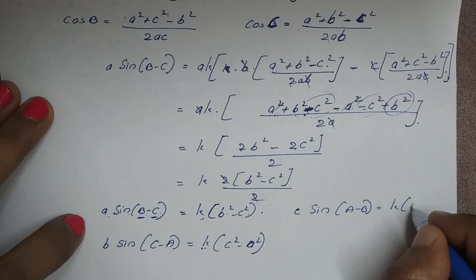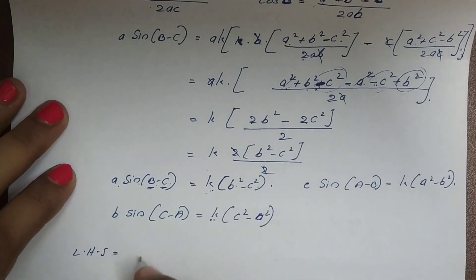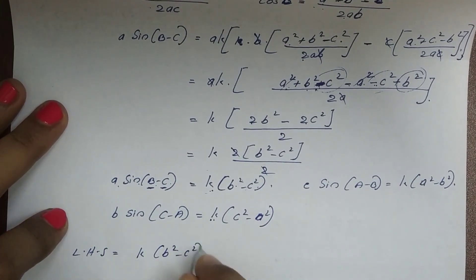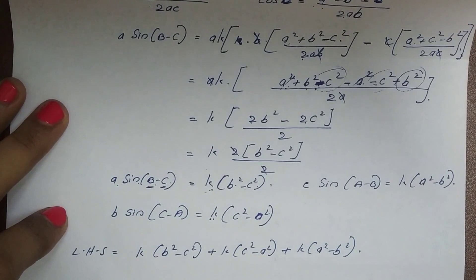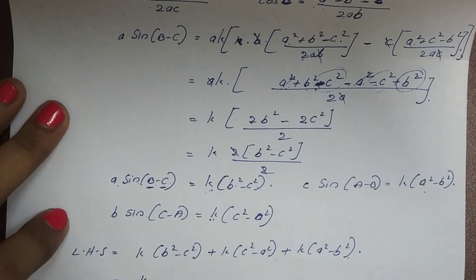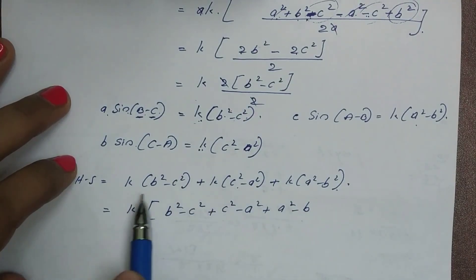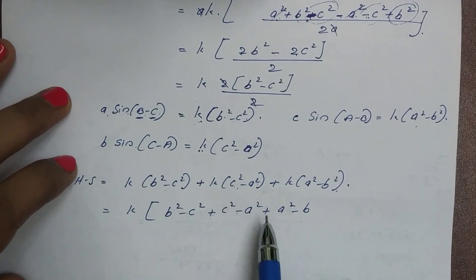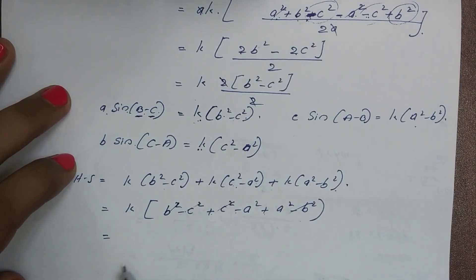Adding all three: k·(b² − c²) + k·(c² − a²) + k·(a² − b²) = k·[b² − c² + c² − a² + a² − b²] = k·0 = 0. Thus LHS = 0 = RHS.